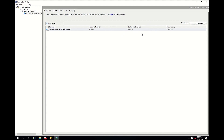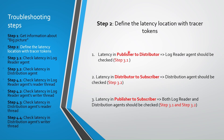If you face latency here, there will be something like two minutes or one hour that you observe. If you observe latency in publisher to distributor, you should check the log reader agent, which is step 3.1. If you spot latency in distributor to subscriber, you should check the distribution agent, which is step 3.2. But if you observe latency everywhere from publisher to subscriber, you should check both step 3.1 and step 3.2.